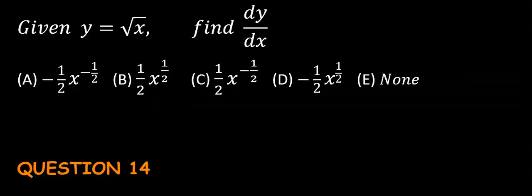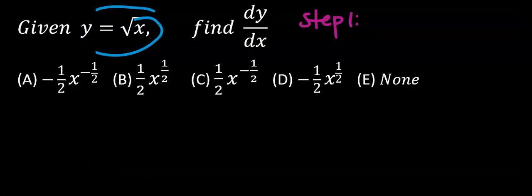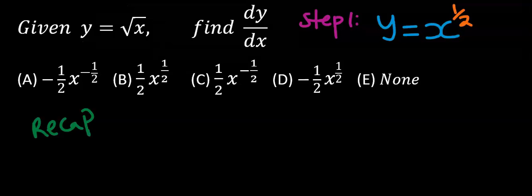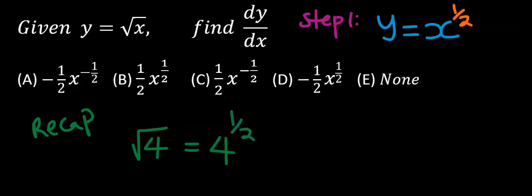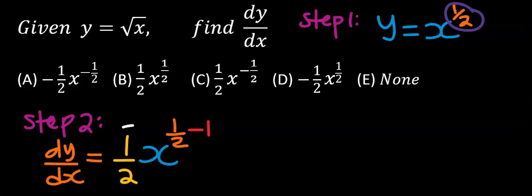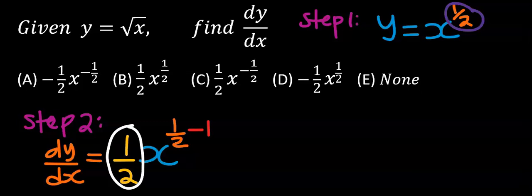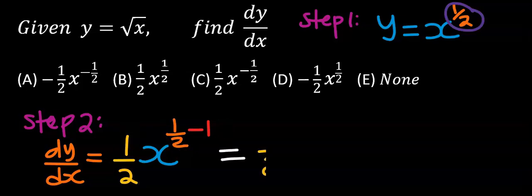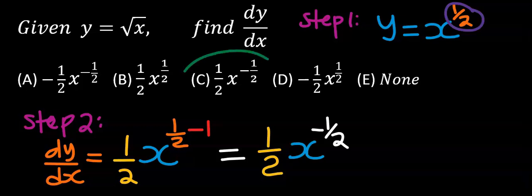Next, consider this question. Step one: rearrange this function. Recall that the square root of x is the same as x to the power of one-half. Step two: differentiate. Only the one-over-two at the power makes the movement — the one-half came down and equally subtracted one at the top according to the general rule. From the options our answer is C.